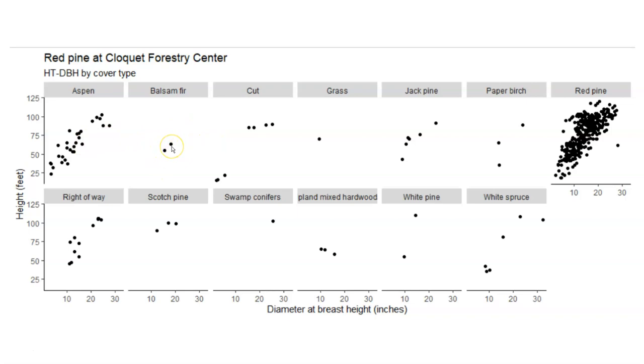It looks like there are two red pine trees in the balsam fir cover type. This is just a little snapshot of the data. Let's take into account what we know about the cover type into our next analysis.